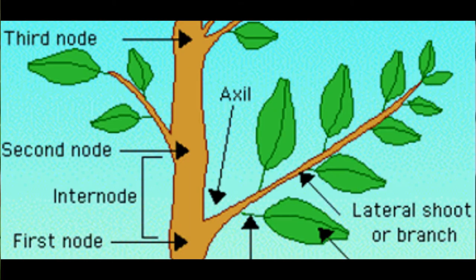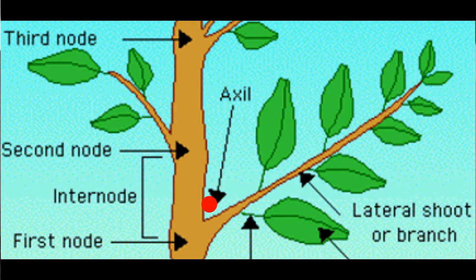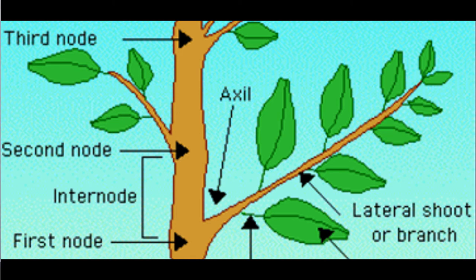So to recap: this is a node, the space between two nodes is the inter-node, then the axil. And sometimes there are buds that grow within the axil, and sometimes right at the top we find buds growing there too. So that's another aspect of this topic that we need to go and research on.